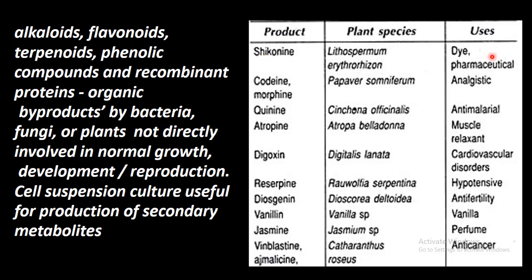These secondary metabolites have pharmaceutical and analgesic uses. Codeine and morphine are pain relievers. Atropine, derived from the plant Atropa belladonna, is used as a muscle relaxant for muscle cramps. Digitalis is used to regulate cardiac function and heart rhythm disorders.